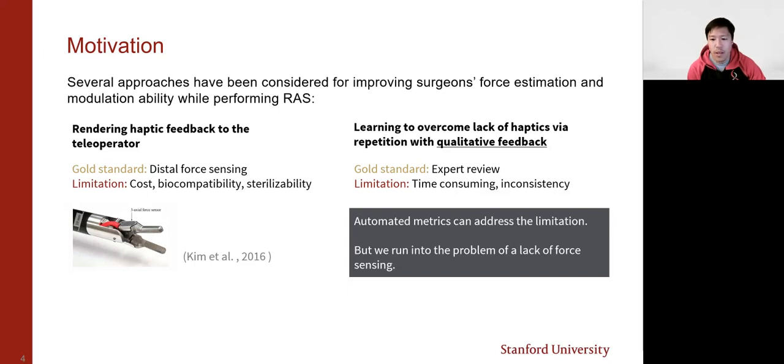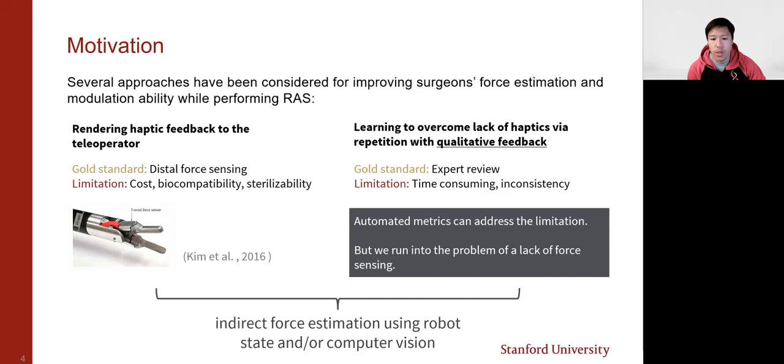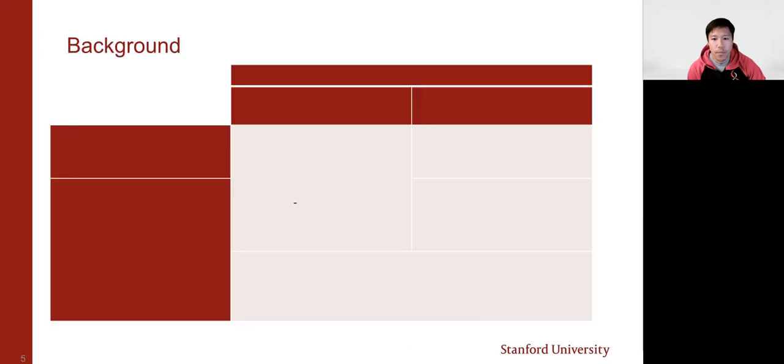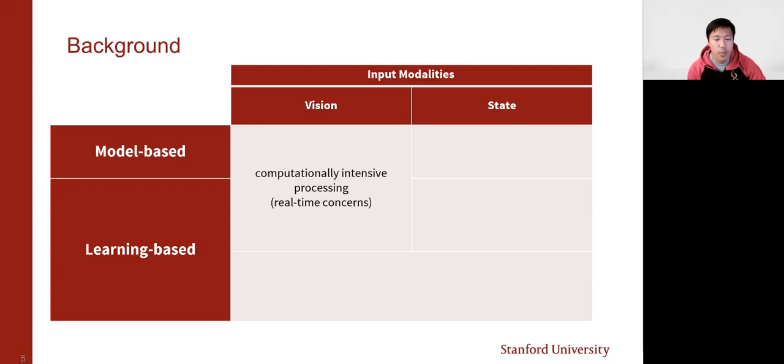These issues have led researchers to look into indirect force estimation using robot state and or computer vision. These methods can be broadly categorized by the type of estimation approach and by the type of input modalities used. Vision-based methods typically have high computational intensity and this leads to concerns about the suitability for real-time vision-based or force-based haptic feedback.